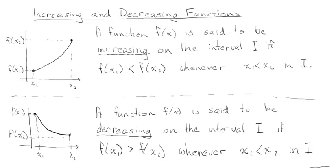The only difference in the definition is the inequality sign is flipped, so f(x1) is bigger than f(x2), which means you're going down as you go from left to right. So the definition really just means: going left to right, if y-values are going up it's increasing; if y-values are going down, it's decreasing.